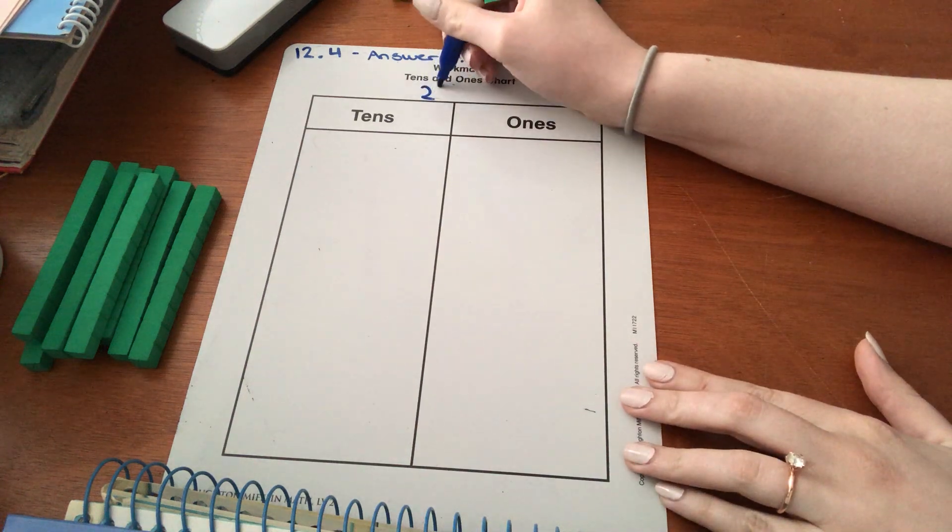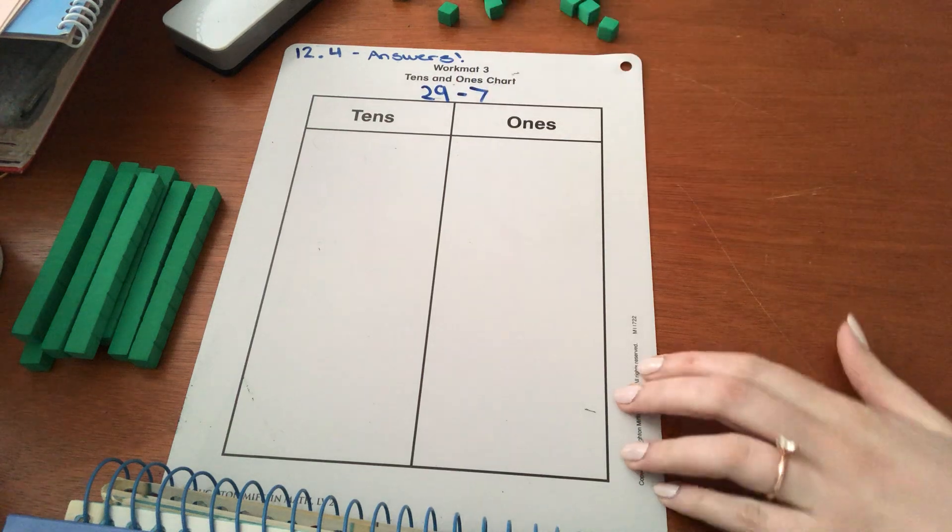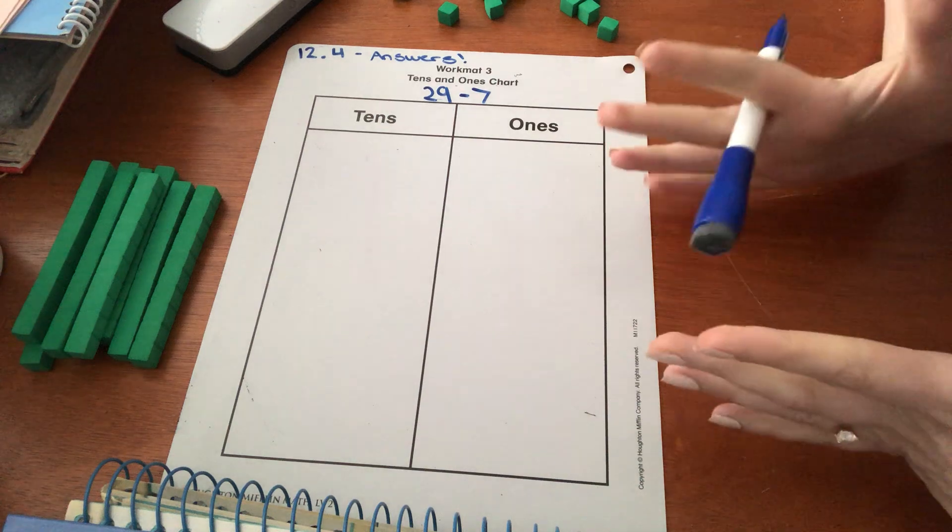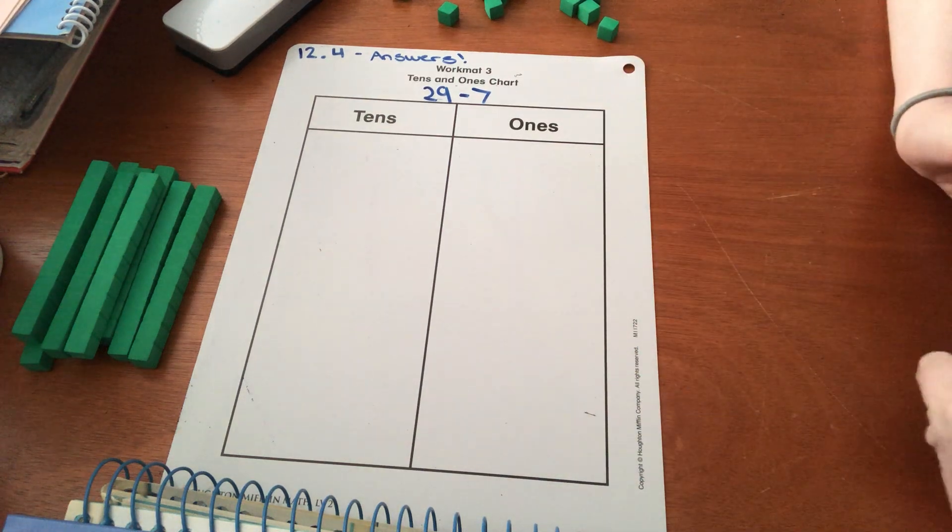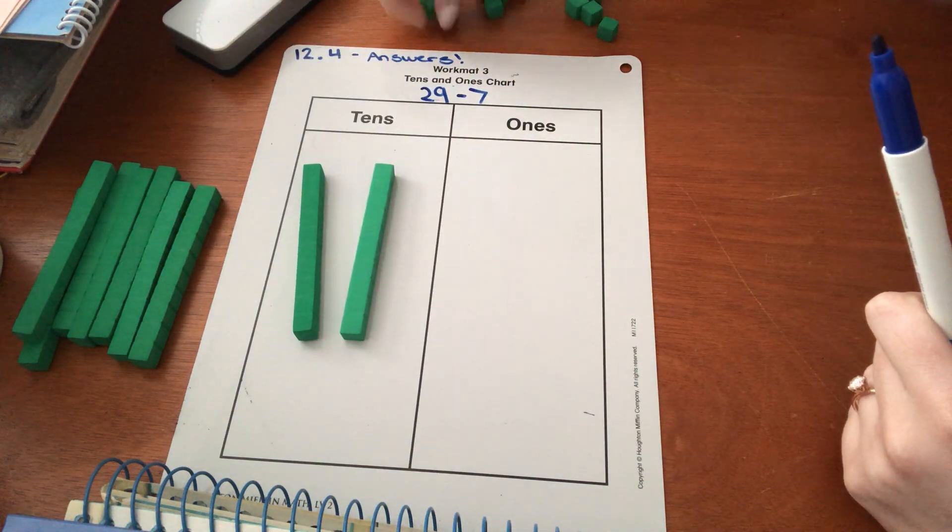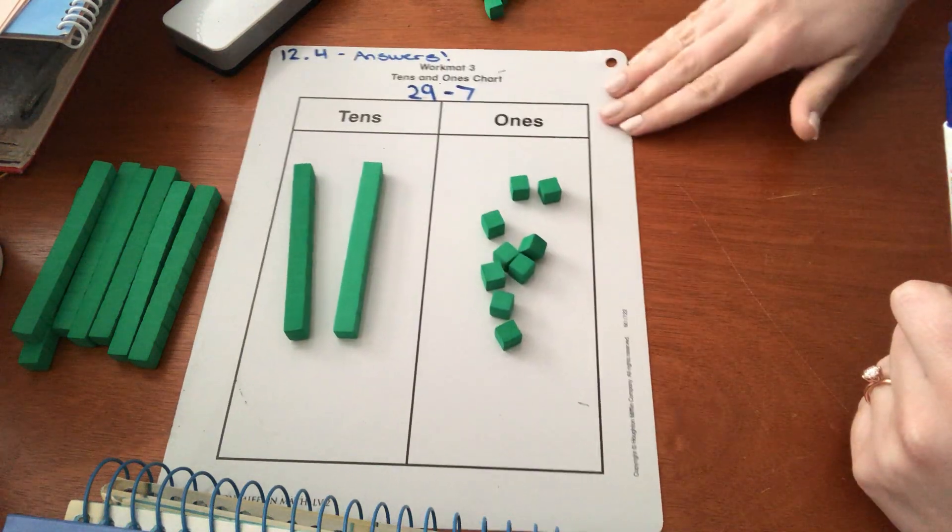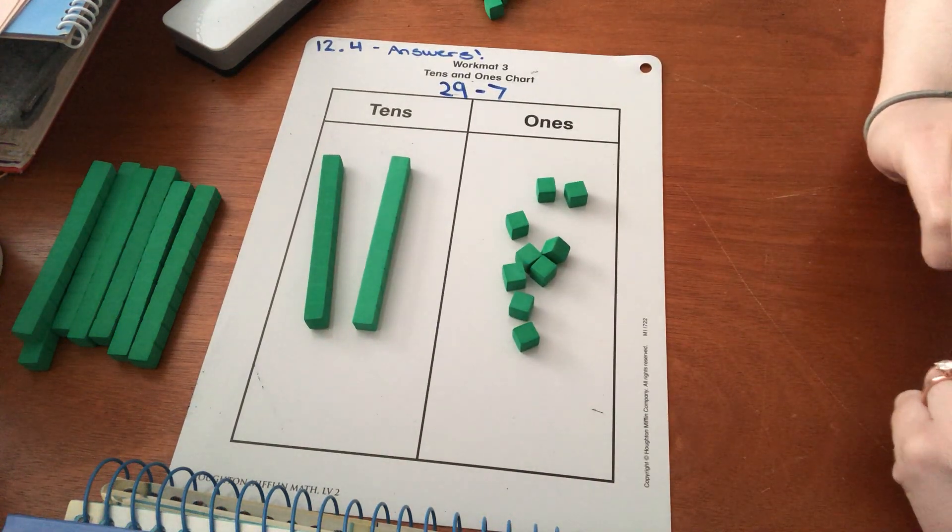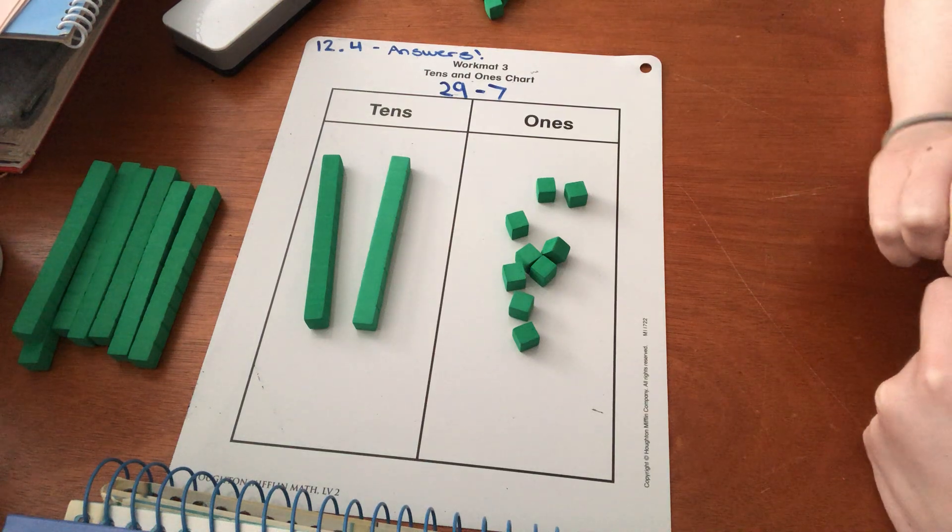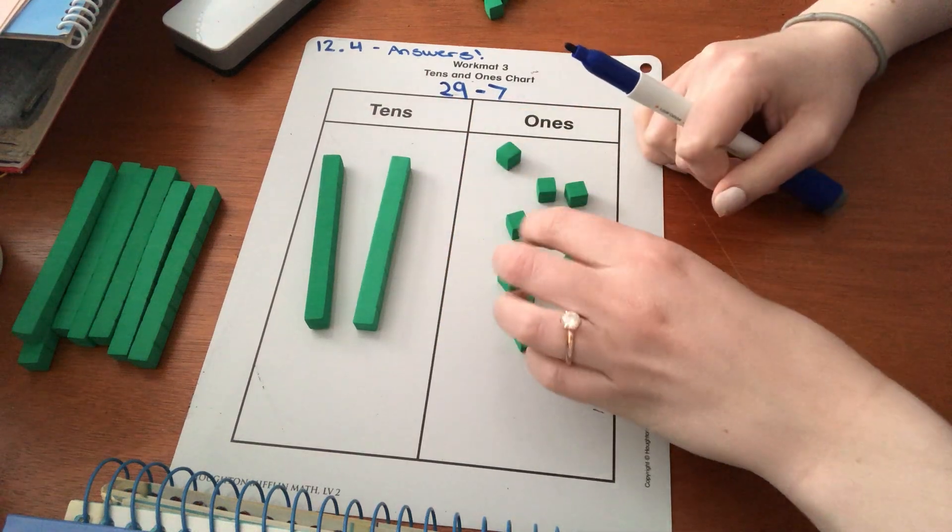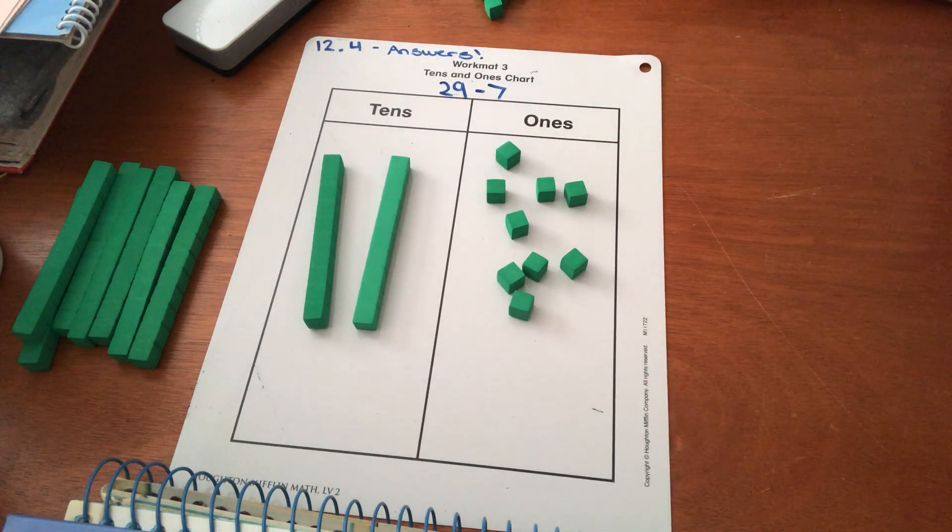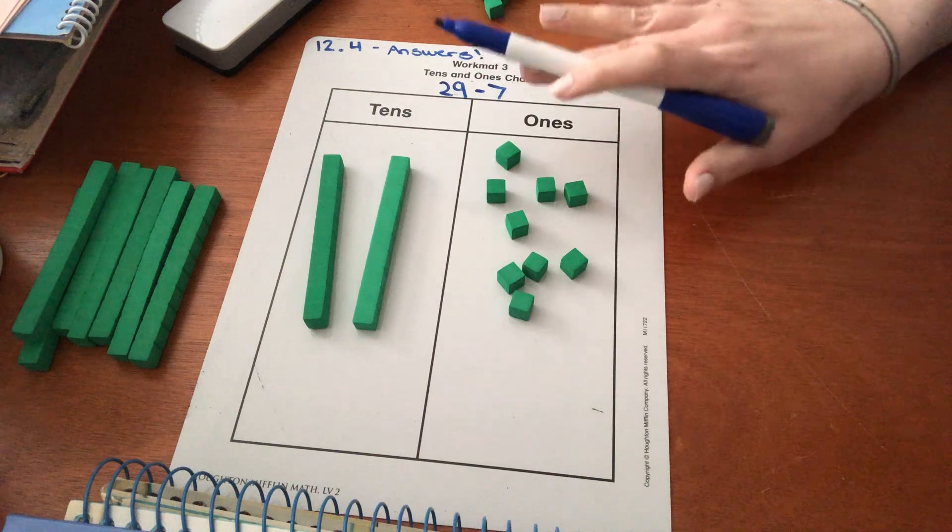29 minus seven. My bigger number is 29. There's two tens and here are nine ones. Now we need to figure out if we need to regroup. Do we have to regroup here? No. I have nine ones here which means I can take seven away so I don't have to put more in here. So we circled no. We do not need to regroup here.